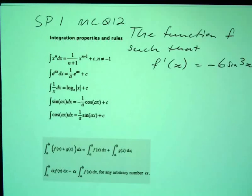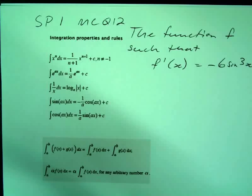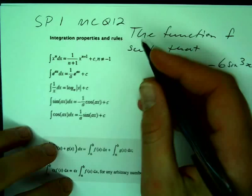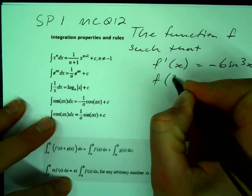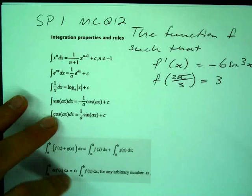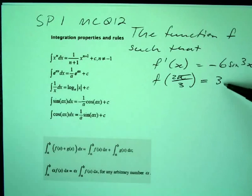So we're working backwards. We've got the derivative, we want the original function. We know that involves anti-differentiation or integration. We're also told that f of 2π over 3 equals 3, and this is going to come in handy when we've got that constant of integration at the end.